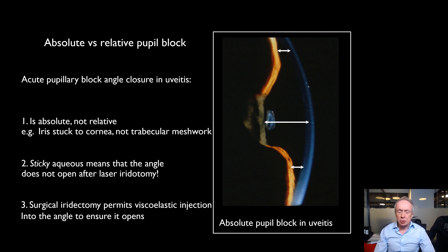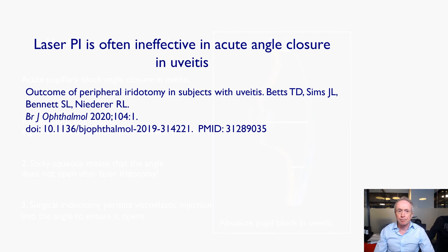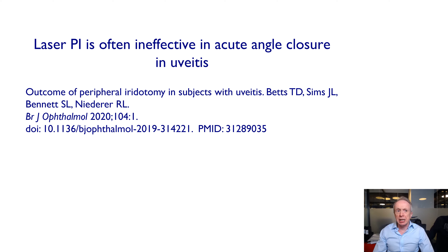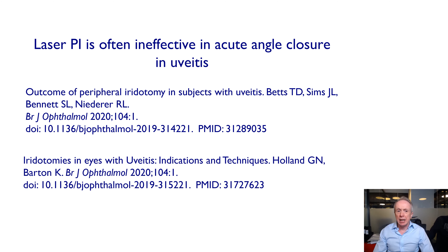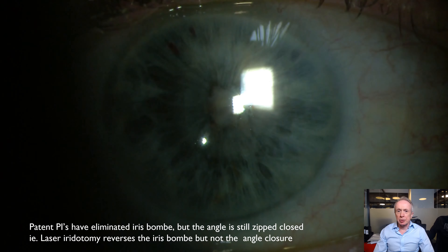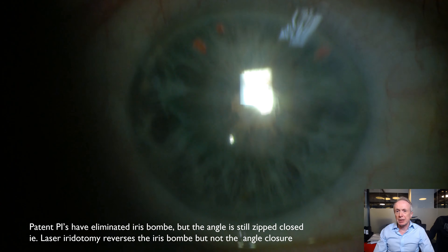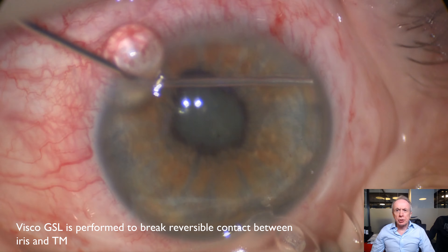Surgical iridectomy, on the other hand, permits viscoelastic injection into the angle, reversing any temporary angle closure — and this is the fundamental difference between surgical iridectomy and laser iridotomy in angle closure in uveitis compared with primary angle closure. Laser iridotomy is often ineffective, and our anecdotal feeling that this was the case was backed up by this publication in the BJO last year, accompanied by an editorial by Gary Holland and myself. This is a good example: patent laser iridotomies have reversed the pupil block — you can see there's a secluded pupil — but on gonioscopy the angle is completely zipped closed and the pressure is still uncontrolled.